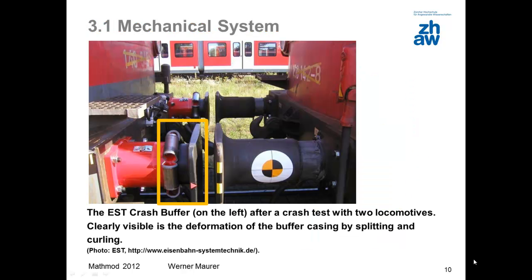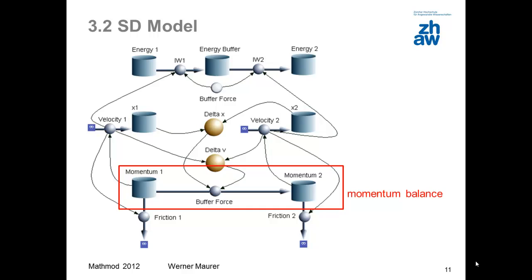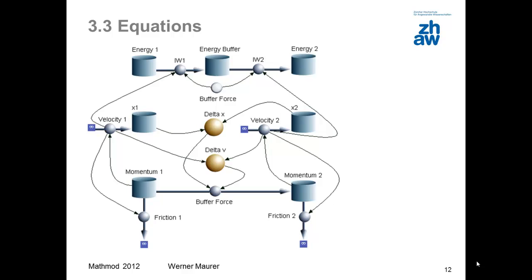Mechanics includes more than just the movement of material points in a void. Mechanics is also concerned with deformable elements, as shown in this example of a crash buffer. This is a model of an overrunning collision between two freight wagons. It includes a momentum balance, kinematics, the flow of momentum, and the energy balance. The energy balance has no retroactive effects on the rest of the dynamic system.